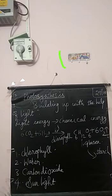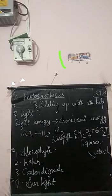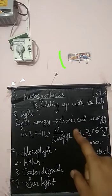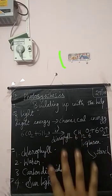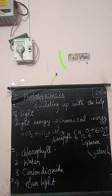During photosynthesis, light energy is converted into chemical energy. The overall equation of photosynthesis is: carbon dioxide plus water gives glucose plus oxygen. Chlorophyll is the pigment present in green plants. So in the presence of light and chlorophyll, carbon dioxide plus water is converted into glucose plus oxygen. That glucose is then converted into starch and stored in the plant body.